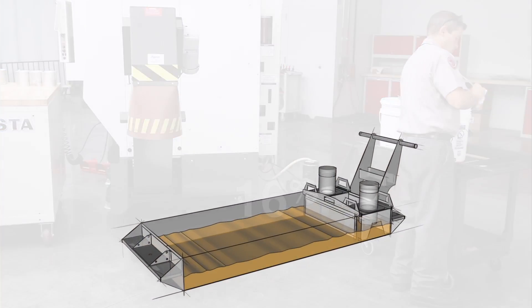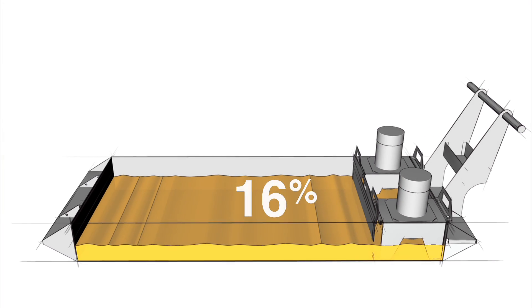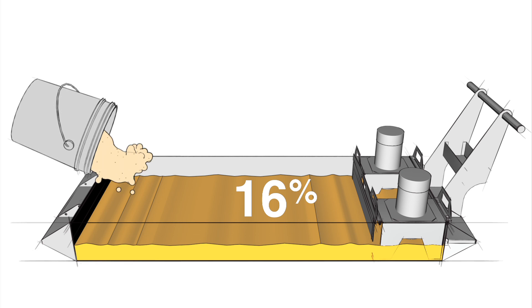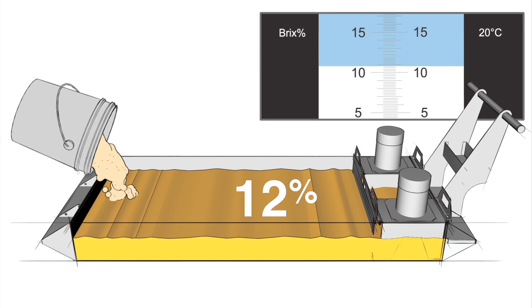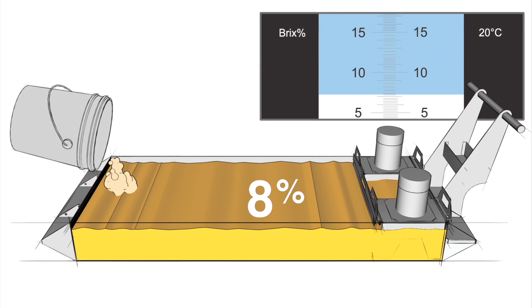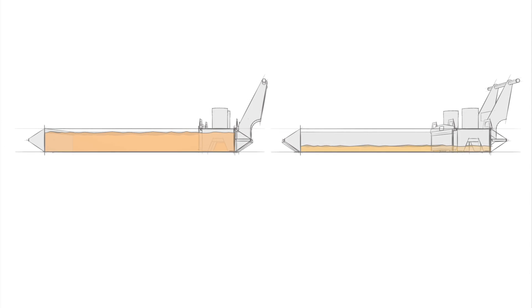The logical thing to do is dilute this rich coolant to get the concentration back between 6 and 10%, where it will perform correctly. Here are a couple of ways to do this that will work with most any brand of coolant.